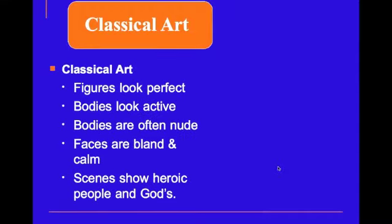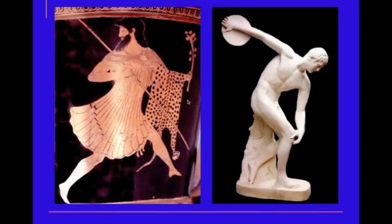Really, it's a combination of both classical art and medieval themes. In classical art, the figures look perfect — this is Greek and Roman. Bodies were active and often nude, showing the nude form. Faces are bland and calm, especially in early classical art. Scenes show heroic people and gods. You can see a vase painting here, or freestanding sculpture — this is probably a Roman copy of a Greek original.